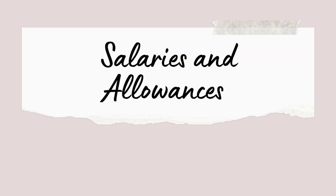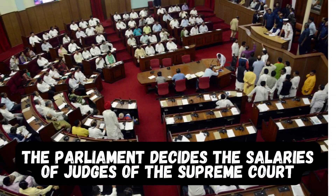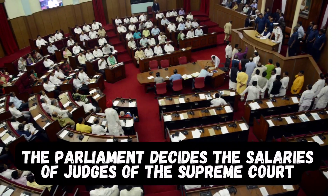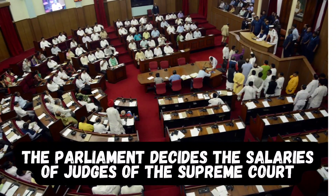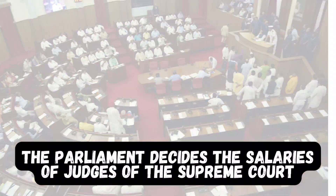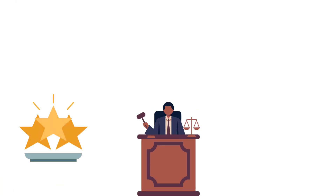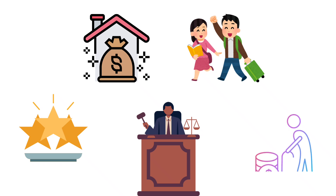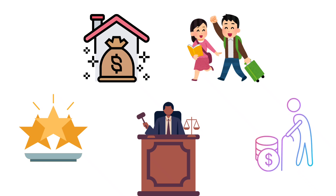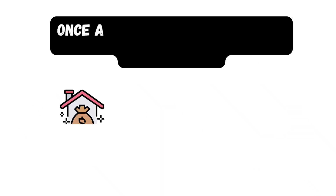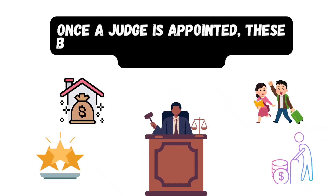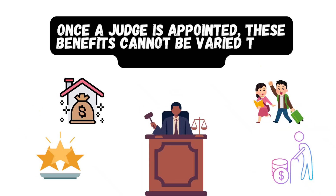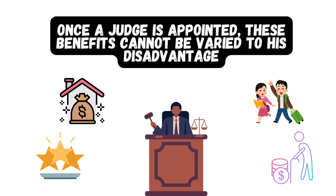Salaries and Allowances: The Parliament decides the salaries of judges of the Supreme Court. Judges are entitled to privileges, allowances, leave, and pensions as determined by the Parliament. Once a judge is appointed, these benefits cannot be varied to his disadvantage.